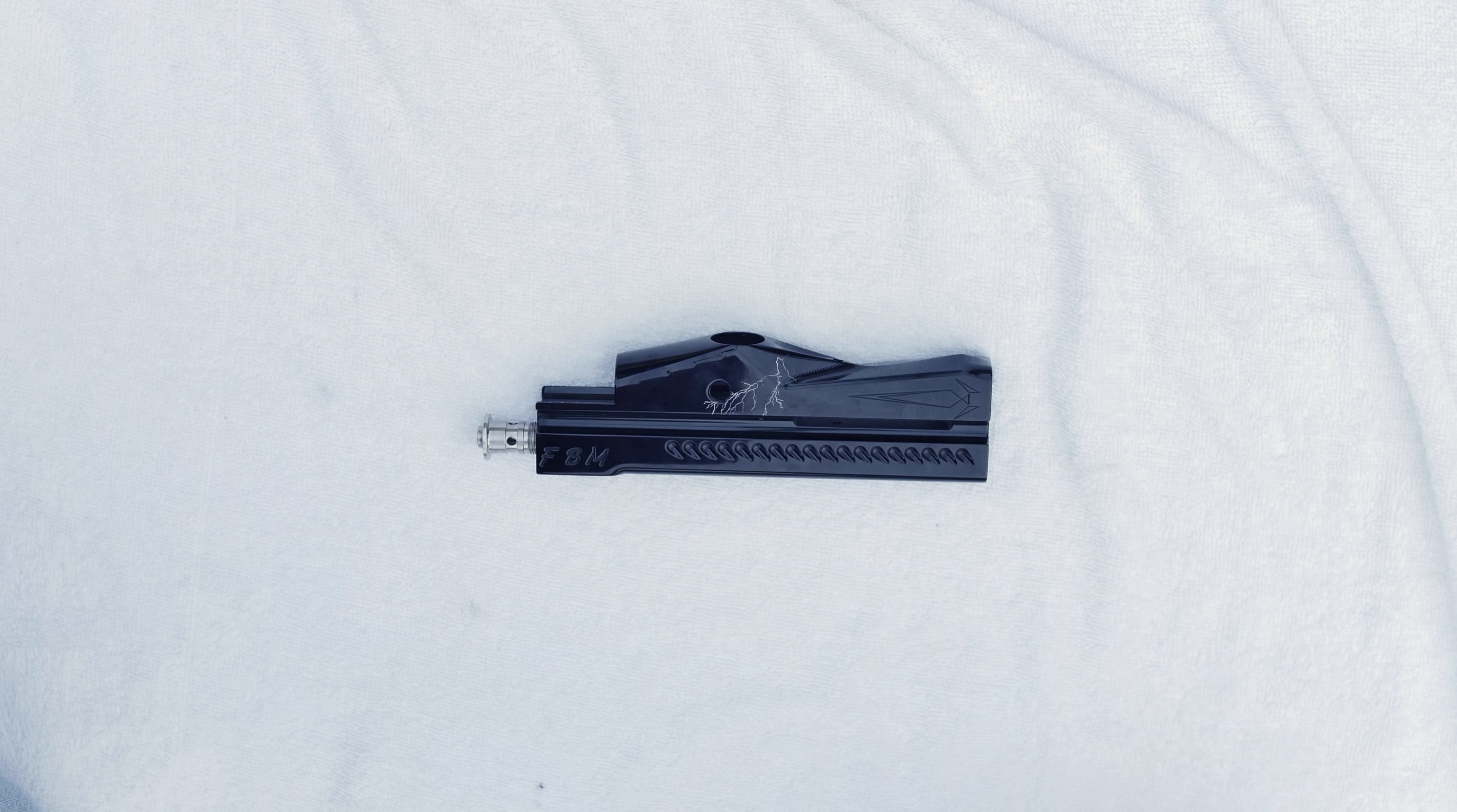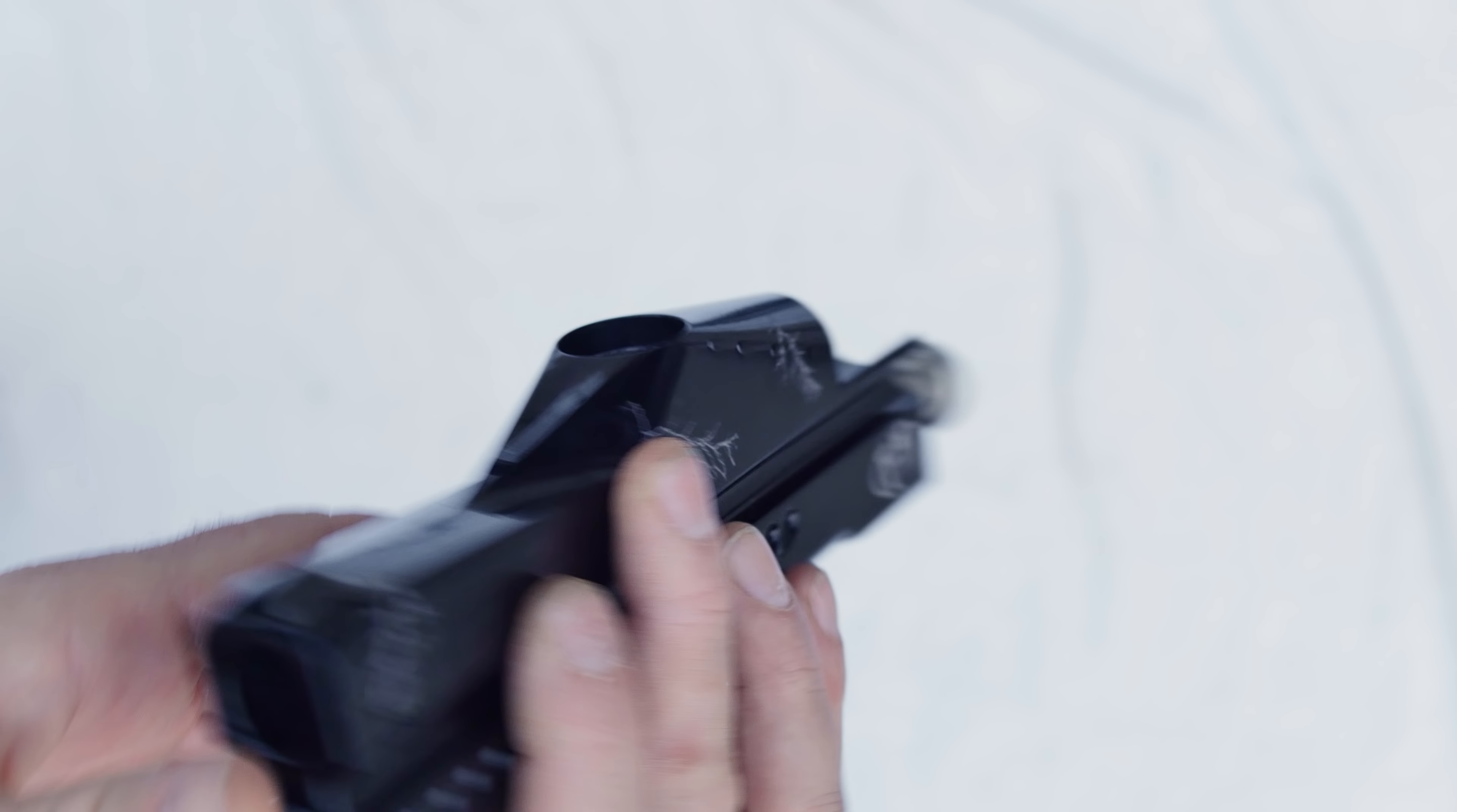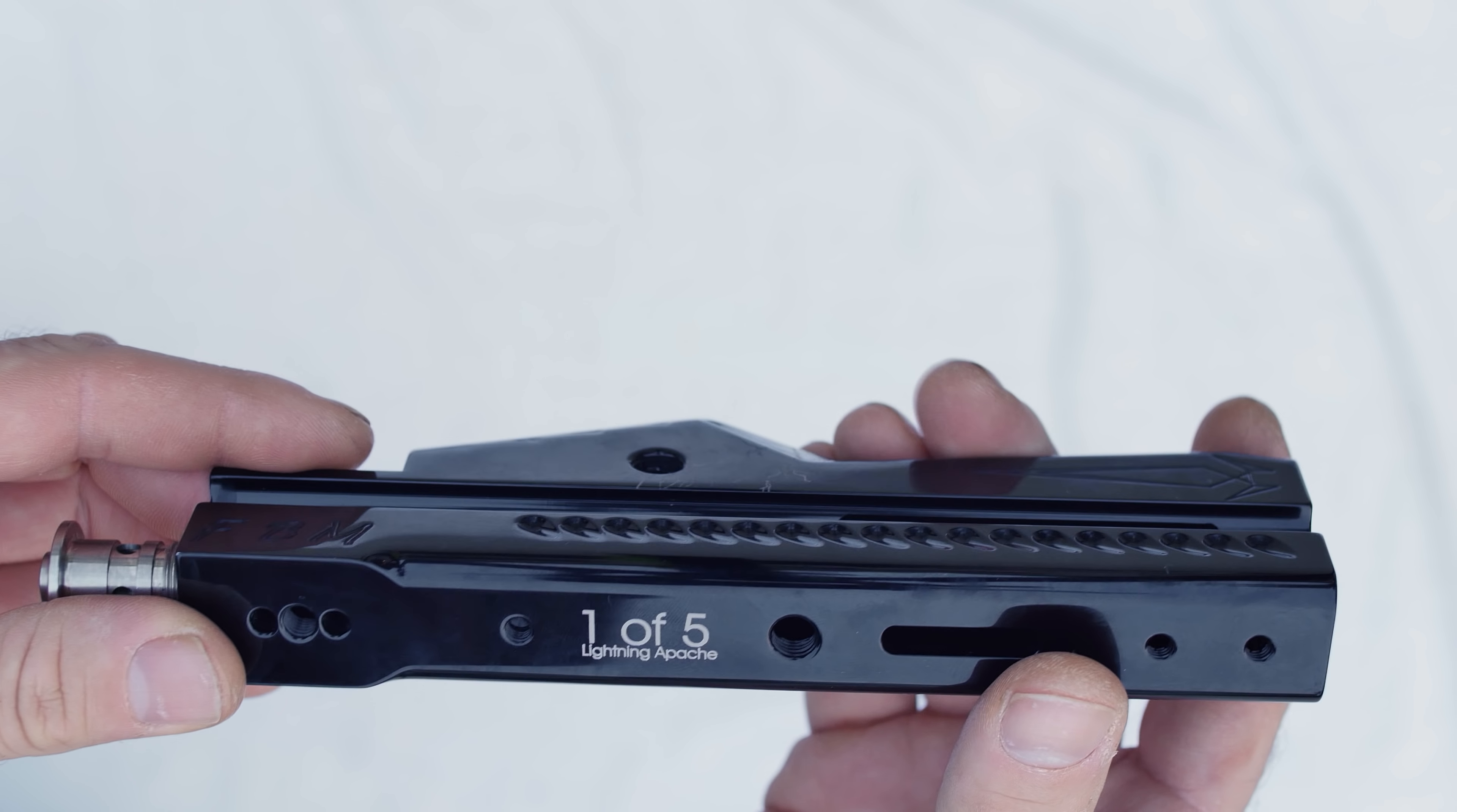Then we have an FBM one of five lightning bodies. Let's look first at the lightning body, get a good look at it because it's pretty cool. The Apache bodies are cool, and seeing one with the lightning engraving on it is extra cool. Here's an FBM Apache lightning body with the logo for FBM and the lightning.